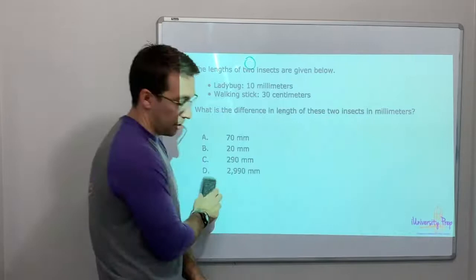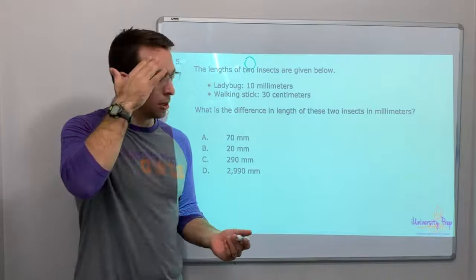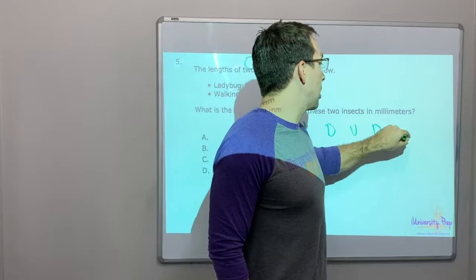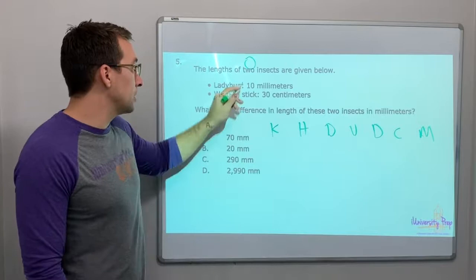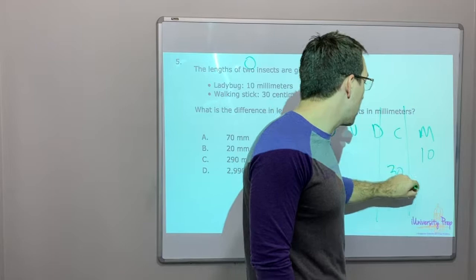I believe this is our last question. The length of two insects are given below. 10 millimeters and then 30 centimeters. What is the difference in length between these two in millimeters? King Henry died unexpectedly drinking chocolate milk. Centimeter, millimeter. So this is a ladybug, is 10 millimeters. And then a walking stick is 30 centimeters. But look, we have to move over one column. So add that to zero there.